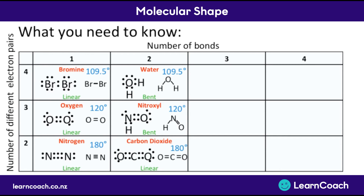Finally, we might have two sets of double bonds, like in carbon dioxide. They're 180 degrees apart, so they're also linear, and you need to draw the diagram linear as well.